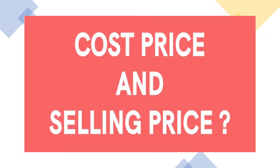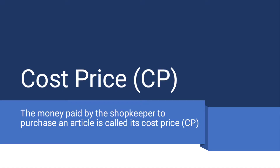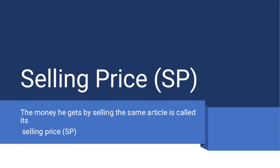So let us learn what is cost price and selling price. The money paid by the shopkeeper to purchase an article is called its cost price or CP. And the money he gets by selling the same article is called its selling price or SP.